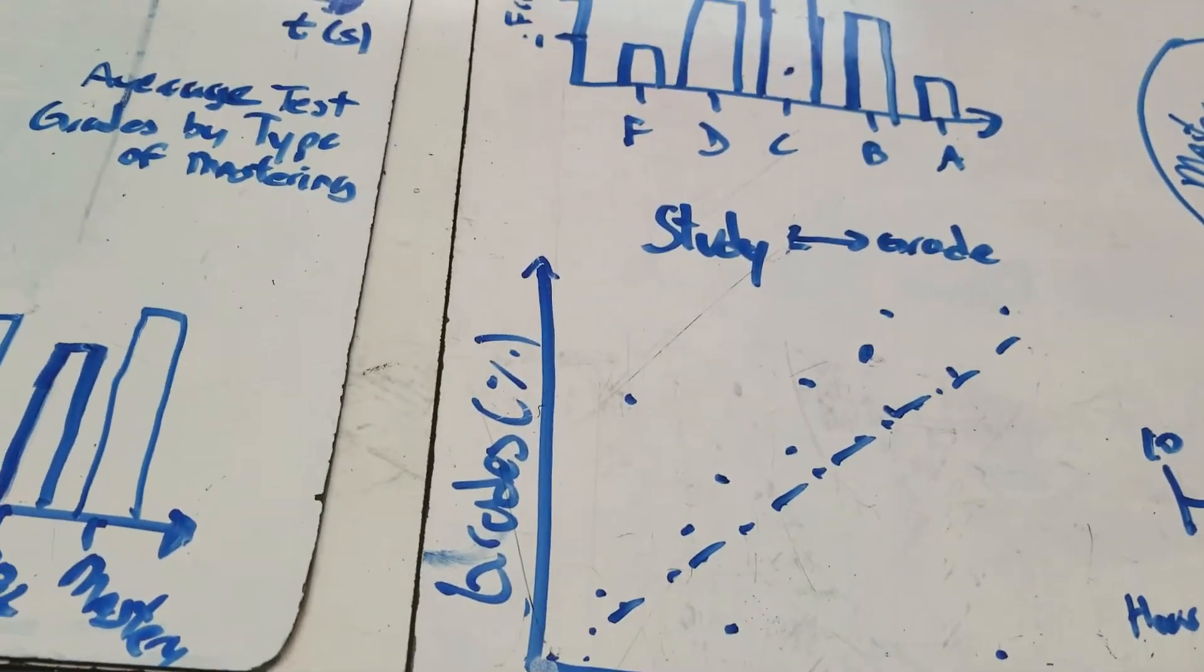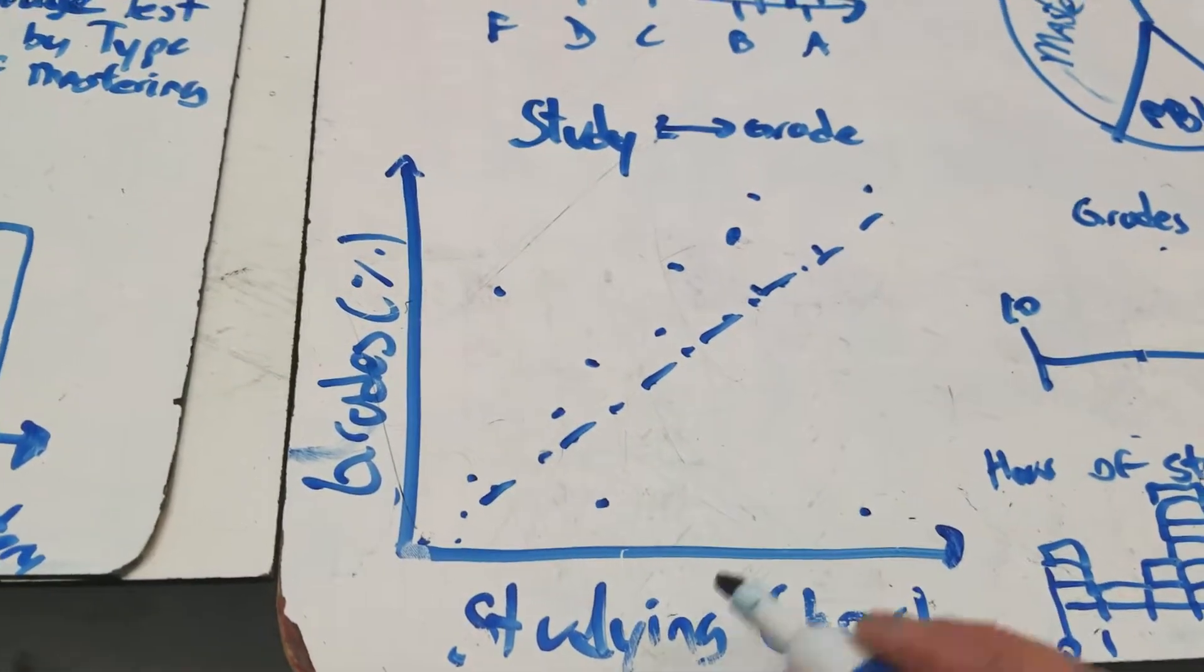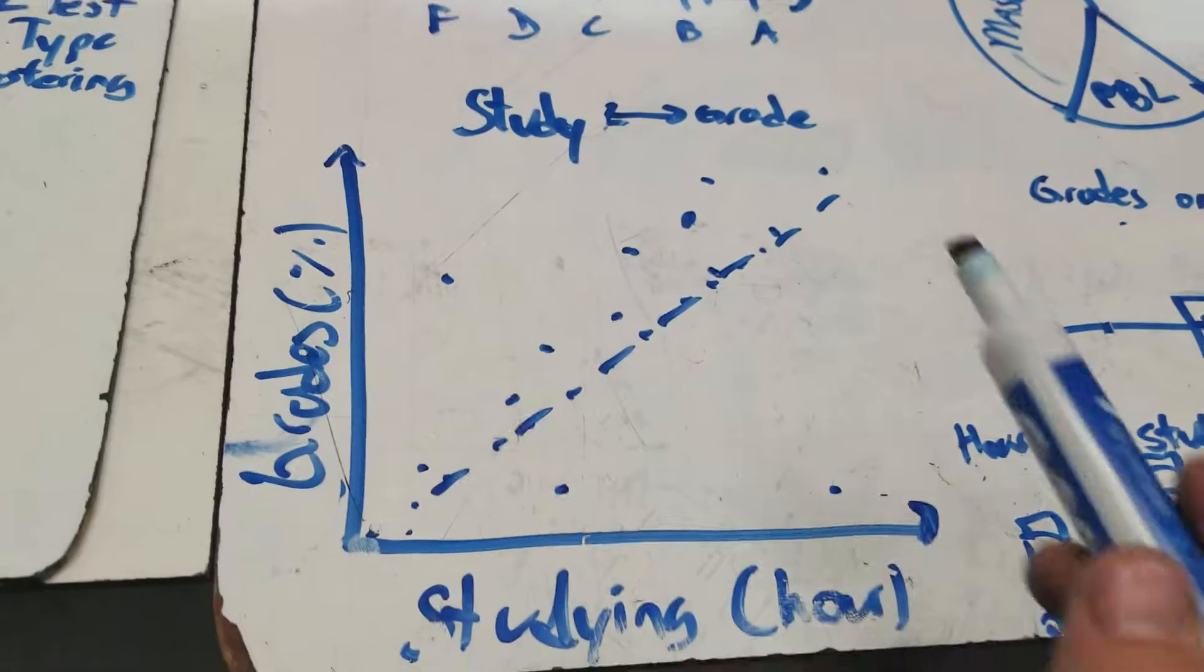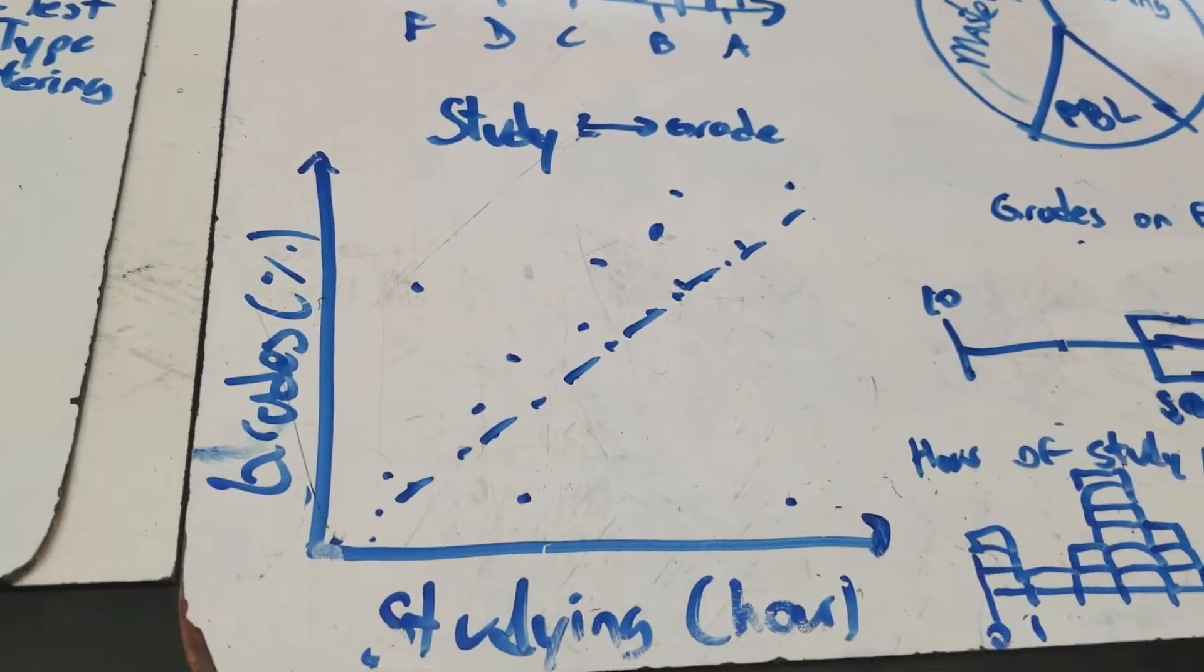Then you can see a pattern that with more studying, grades go up, apparently. Again, this is invented data, but this probably would be true. And so scatter plots are used very often, and these lines of best fit are very common.